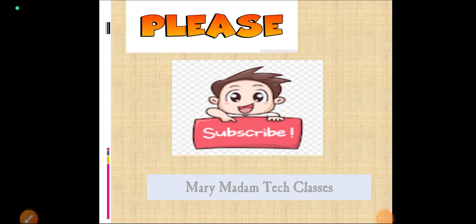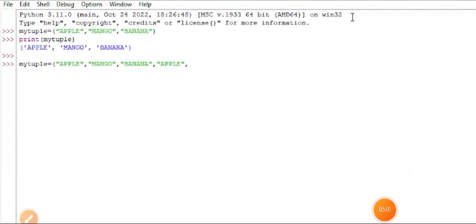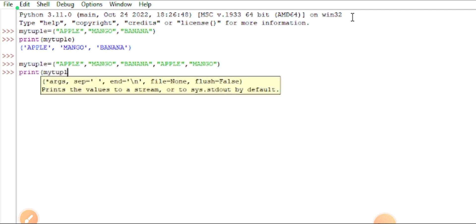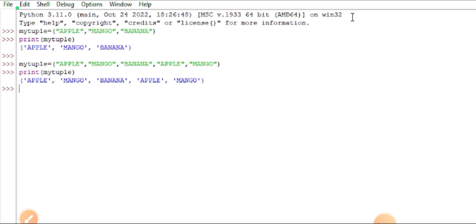See here, I am going to type my tuple with duplicate values: apple, mango, banana, apple, mango. I want to print my tuple. Apple, mango, banana, apple, mango. In the first example, my tuple is equals to apple, mango, banana. Printed my tuple. The output is apple, mango, banana.